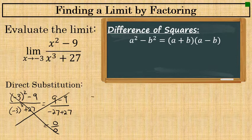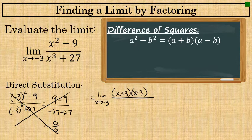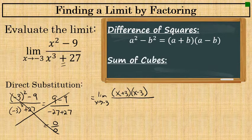So I can rewrite this limit as x approaches negative 3 with the numerator of x plus 3 times x minus 3. The denominator is not a difference of squares — it's not a difference at all, it's a sum, and the two terms are perfect cubes.